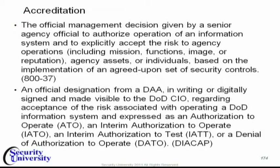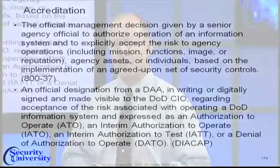Accreditation is really the validation — the determination by someone with operational responsibility to accept risk on behalf of the organization. This accreditation official, called an authorizing authority or official, or a DAA — designated approving authority — evaluates all the information the certification process yields and the certification recommendation, then makes the decision to either accept the risk in total, accept it temporarily with the expectation that fixes or mitigations will take place, or decide that the operational risks outweigh the operational benefits.